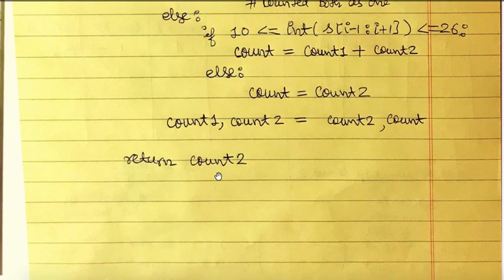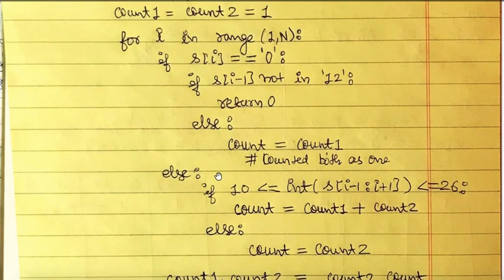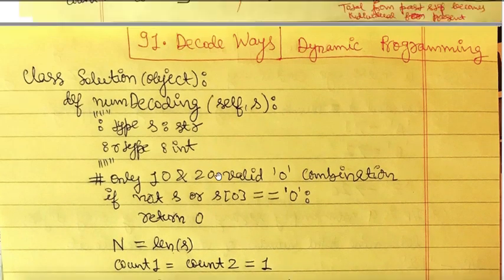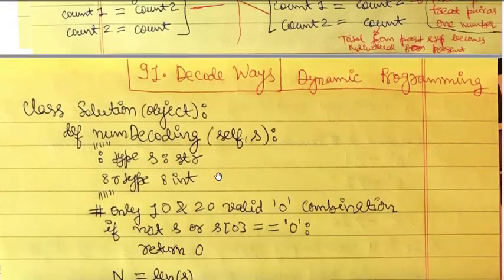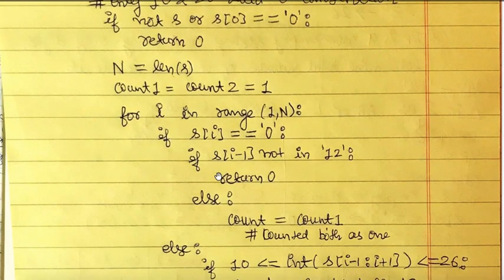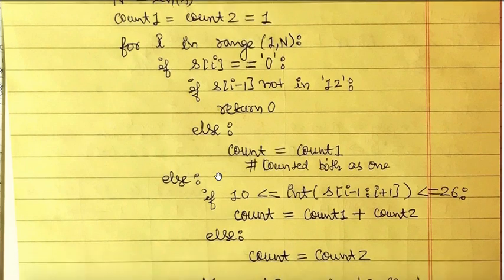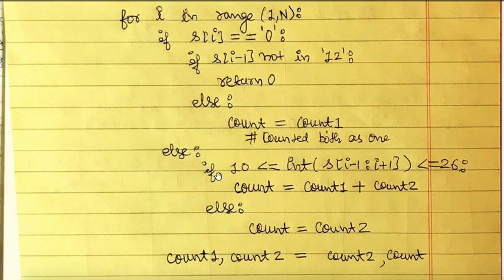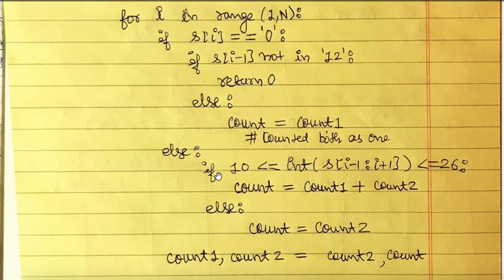This problem is a little complicated, but if you understand why we have two variables count1 and count2 and how they interact to produce the complete count, it becomes simpler. I highly recommend tracing through the simple example '12' first, then the more complex '226' with valid pairs and '276' with invalid pairs, running them through the code manually.